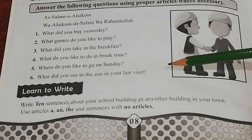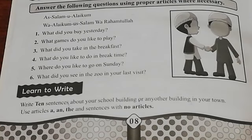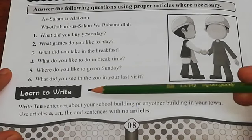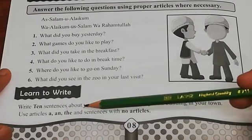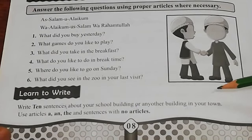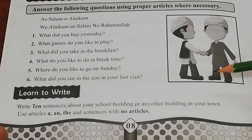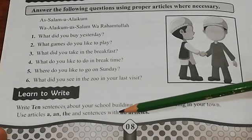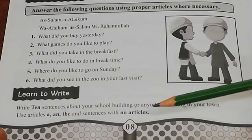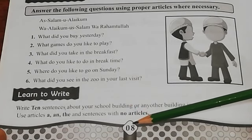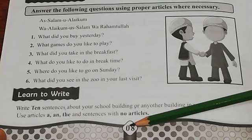Dear students, I hope that you have done this activity with your partner. Now it's time to move on to today's homework, and today's homework is the segment 'Learn to Write.' First I'll read out the instructions for you. The task is: write ten sentences about your school building or any other building in your town. Use articles — 'a,' 'an,' and 'the' — and also sentences with no articles. You have to make ten sentences. It will be an easy task for you.